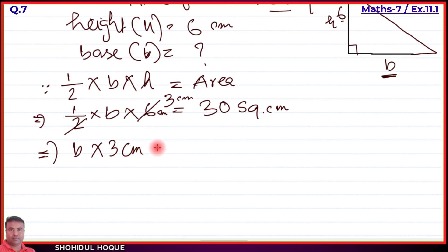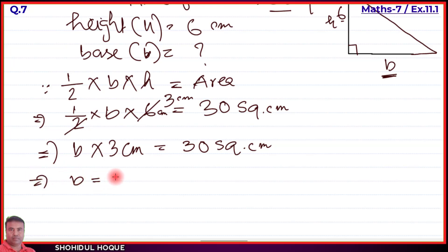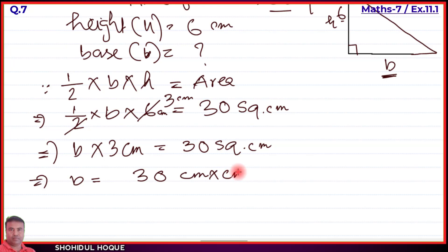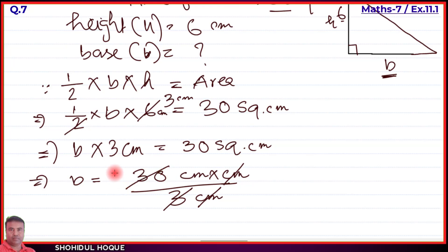Three centimeters multiplied by the unknown side equals 30 square centimeters. We transpose three centimeters to the right-hand side. So the unknown side equals 30 square centimeters divided by 3 centimeters. The centimeters cancel out, and 30 divided by 3 gives us 10.